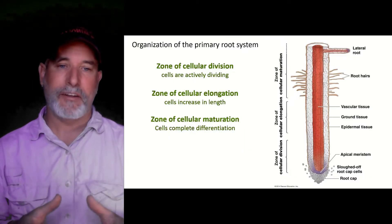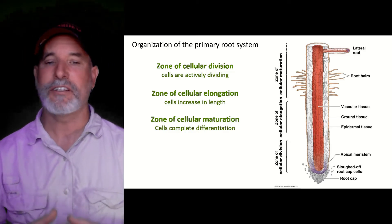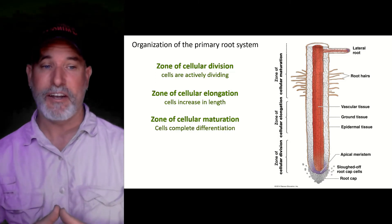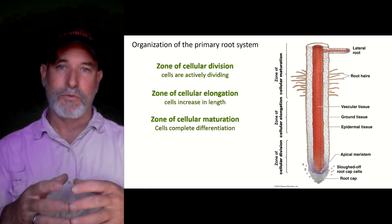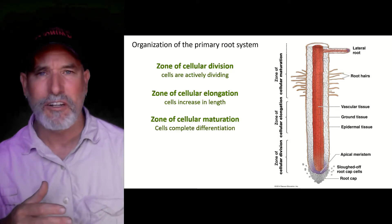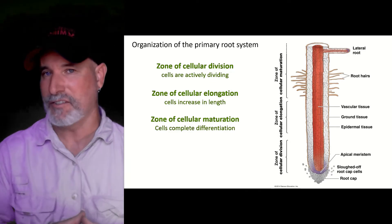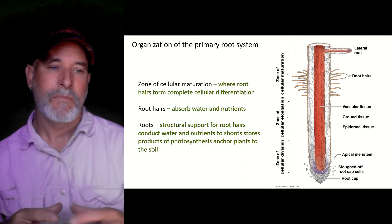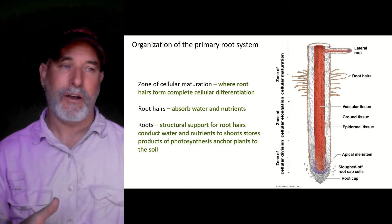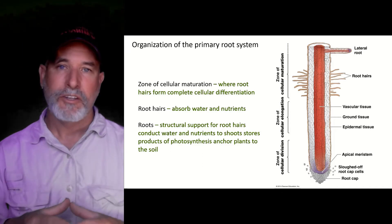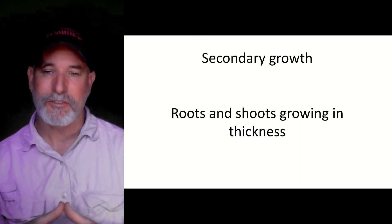When a root is growing, you have a zone of cellular division where mitosis is taking place, adding and differentiating cells. This increases length only, not thickness. As the root ages, you have the zone of maturation where cellular differentiation occurs — the procambium turns into companion cells or sieve tube elements. Eventually root hairs grow from the epidermis, which are very important for increasing surface area to increase absorption of water and minerals.